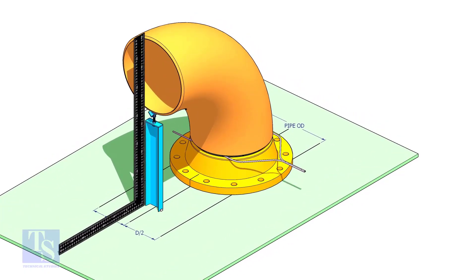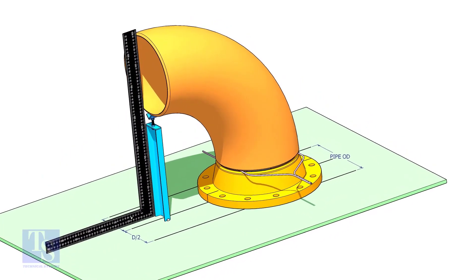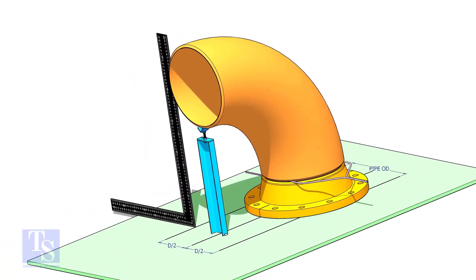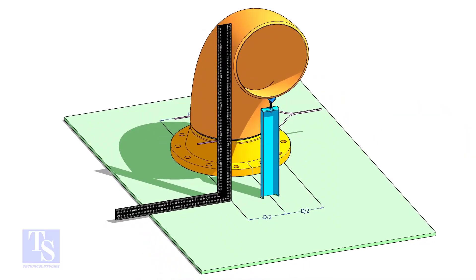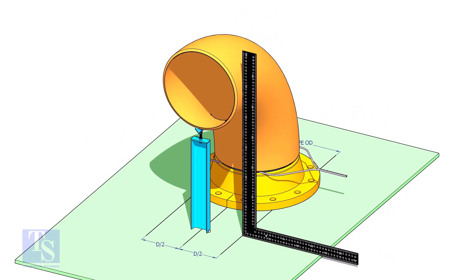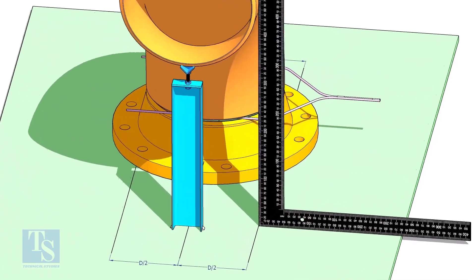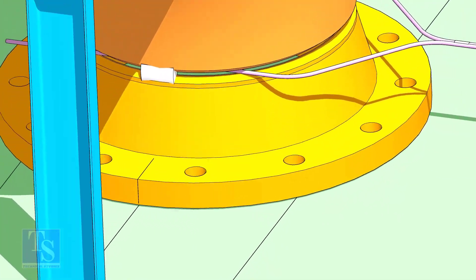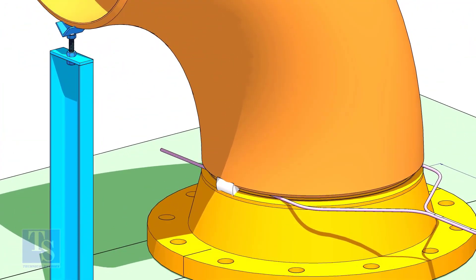Make the squareness of the elbow to the plate. The straightness of the plate is a must. Make sure the face of the elbow and the lines are parallel. Tack weld on all four sides.